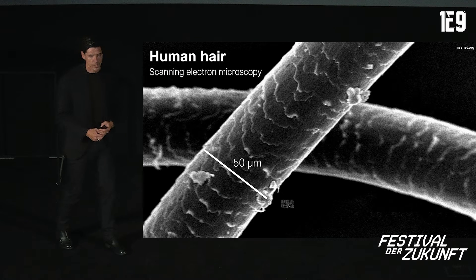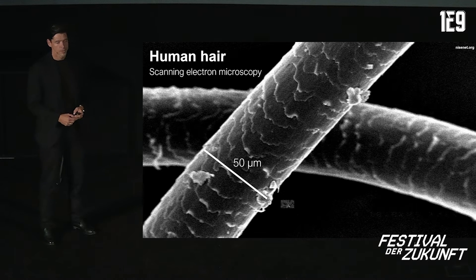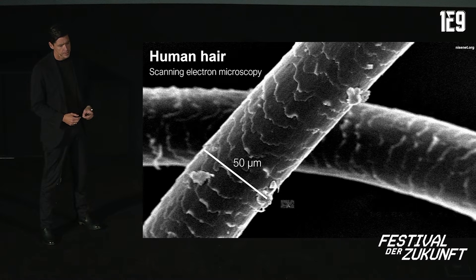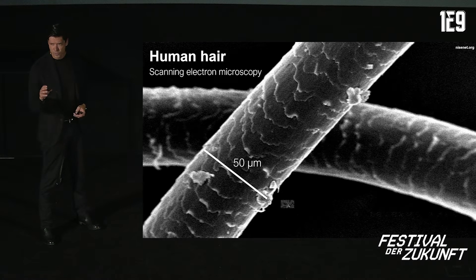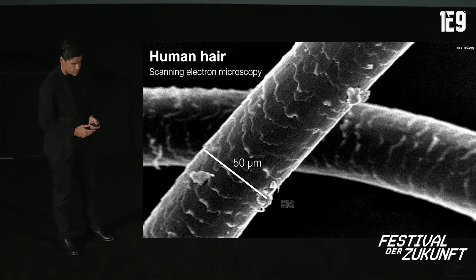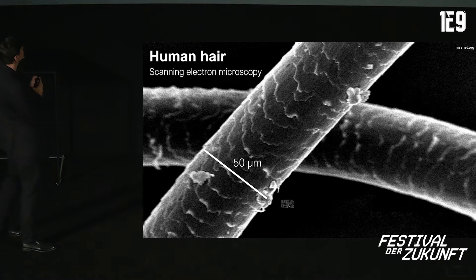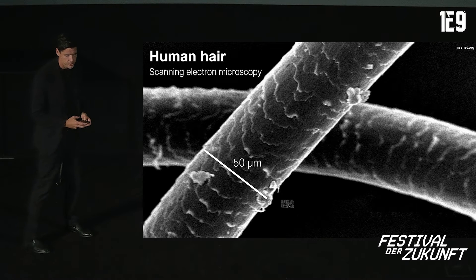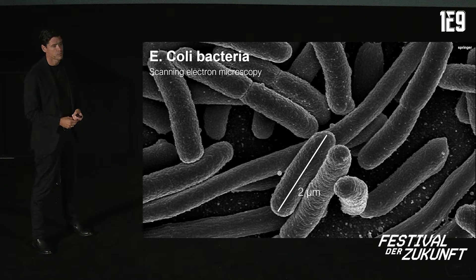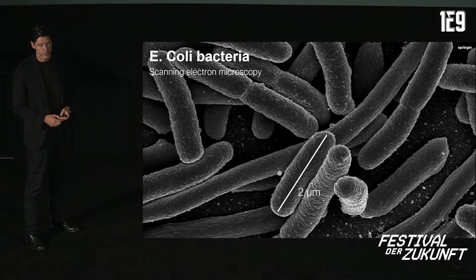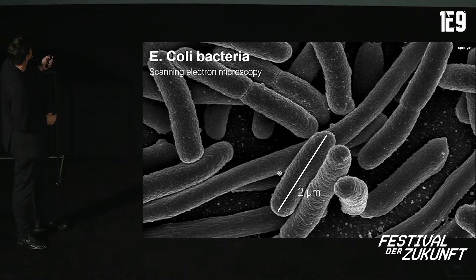To understand the length scales we're going to talk about, I want to show a few pictures. This is a scanning electron microscopy image of human hair — the diameter is typically 50 micrometers. And then you can see this small rectangle here — this is also a scanning electron micrograph, taken from E. coli bacteria, which all of you have many of in your guts. Such a bacterium is about two micrometers in length, much, much smaller than human hair.